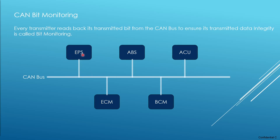Let us take an example. Here we have multiple nodes connected on the CAN bus, and imagine that EPS is a transmitter. So EPS transmits the data into the CAN bus. The purpose of the EPS is not only to transmit but also to verify whether the transmitted data has been clearly transmitted onto the CAN bus. For that, the EPS will read back this data — just like other listeners. All other ECUs looking for EPS frames will read this information, and even the EPS ECU itself will read the data to check and ensure that the data integrity is good. This is called CAN bit monitoring.